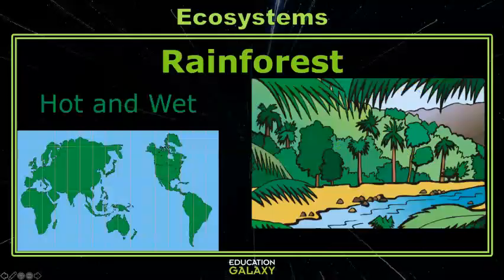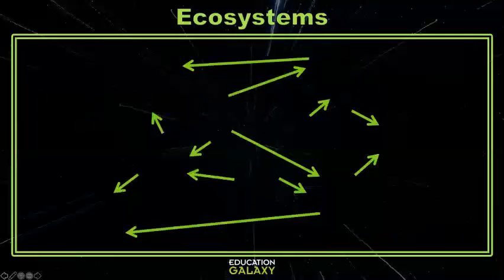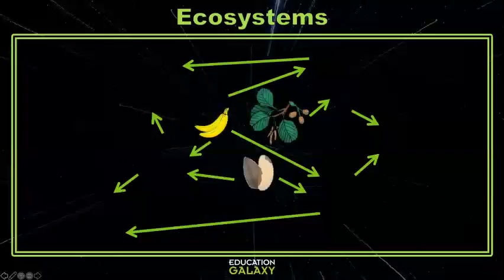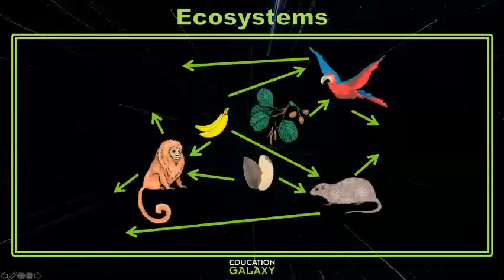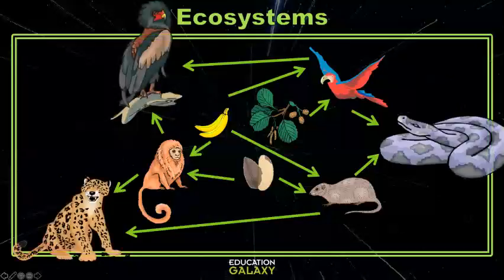Our last terrestrial ecosystem is hot and wet with lots of precipitation every year. The rainforest is one of the most diverse ecosystems. If we look at a food web, it is going to be much more complex here due to the number of different organisms that live here. We have lots of plants, fruits, and nuts that are eaten by parrots, monkeys, and agouti, who are then eaten by panthers, large snakes, and eagles.